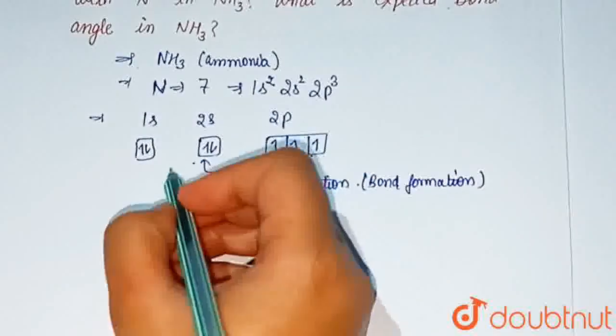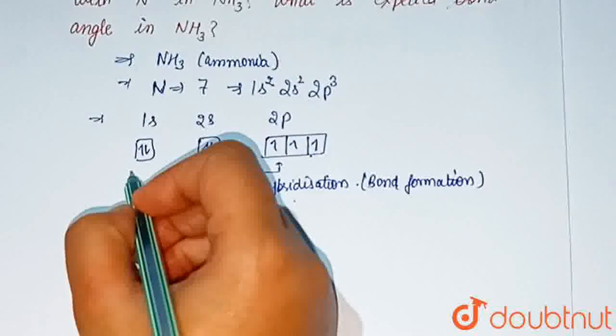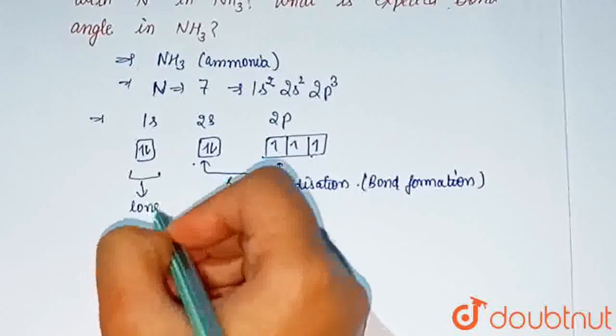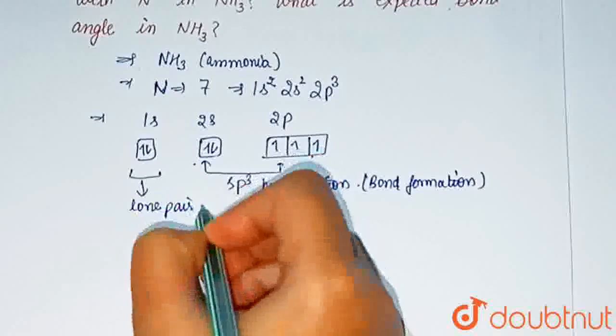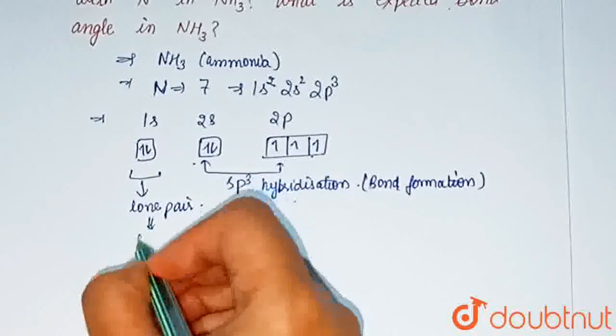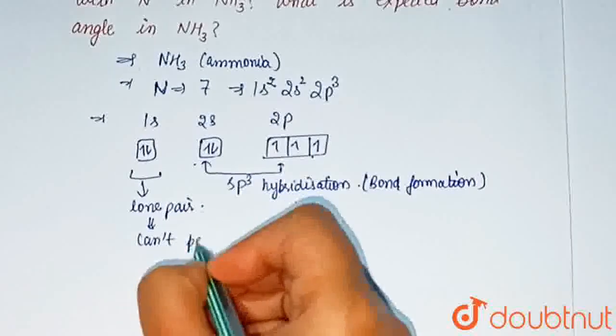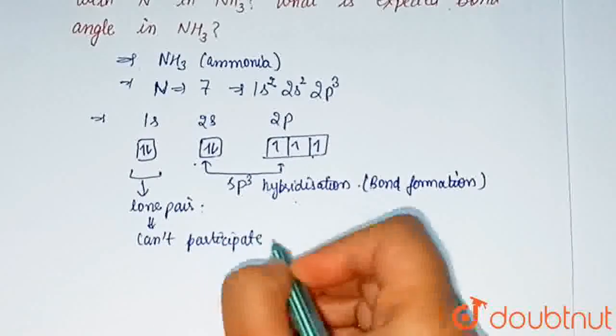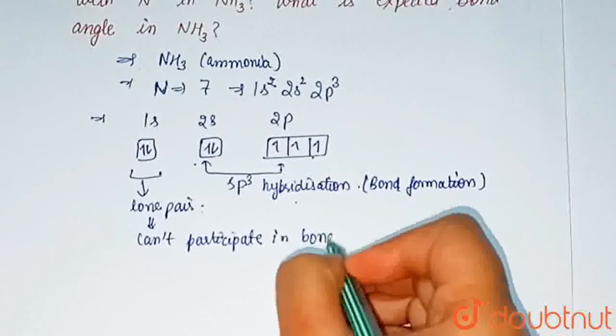And the 4th sp3 hybrid orbital contains a lone pair of electrons. Hence, it cannot participate in bond formation.